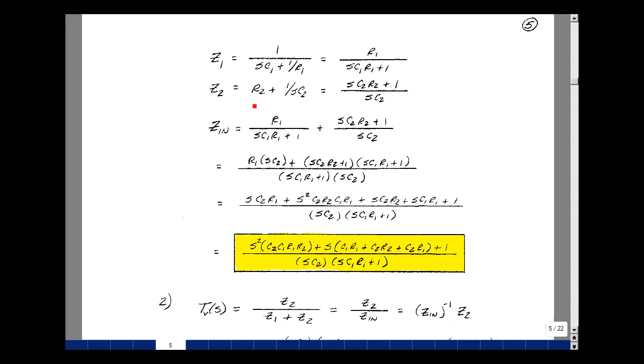And then Z2 was a series combination of a resistor R2 and a capacitor C2. So the impedance would be R2 and then 1 over sC2. The common denominator here would be sC2. So multiply this by sC2, and then we're going to add 1 to it. Then Z_in would be the driving point impedance looking into our circuit. Let's find a common denominator of sC1R1 plus 1 times sC2. So multiply this by sC2. So you get R1 sC2, and then multiply this times this. We're going to get sC1R1 plus 1 times sC2R2 plus 1.